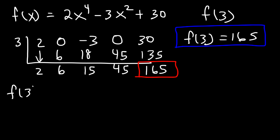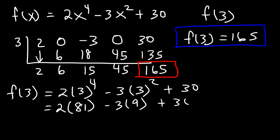Now let's confirm it. So it's going to be 2 times 3 raised to the 4 minus 3 times 3 squared plus 30. So what's 3 to the 4th power? 3 times 3 is 9. 9 times 3 is 27. And 27 times 3 is 81. And then 3 squared, we know it's 9. 2 times 81. That's 162. 3 times 9 is 27. Now, negative 27 plus 30. That's plus 3. And 162 plus 3 is 165. So you can see that we get the same answer.